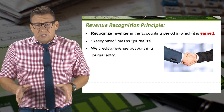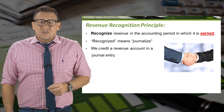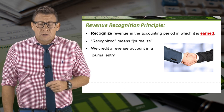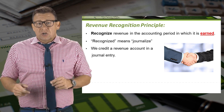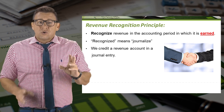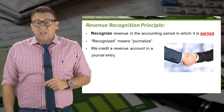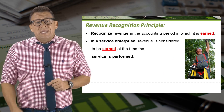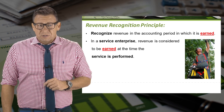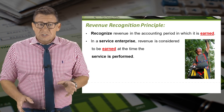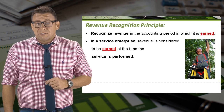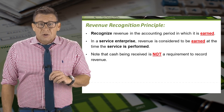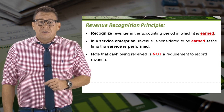The revenue recognition principle tells us that we must recognize revenue in the accounting period in which it is earned. Recognized means journalized, or that we credit a revenue account in a journal entry. For service firms, earned means that we performed the service. For retailers, earned means that goods were delivered. Note that cash being received is not a requirement to record revenue.